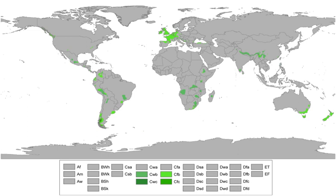Oceanic climates are a product and reflection of the ocean adjacent to them. In the fall, winter, and early spring, when the polar jet stream is most active, the frequent passing of marine weather systems creates the frequent fog, cloudy skies, and light drizzle often associated with oceanic climates. In summer, high pressure often pushes the prevailing westerlies north of many oceanic climates, often creating a drier summer climate, for example in the northwest coast of America, bathed by the Pacific Ocean.